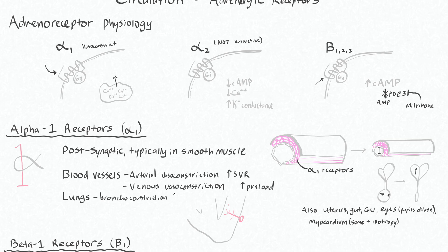This is a slice of your heart — the myocardium — and this is an epicardial vessel, which will have alpha-1 receptors on it. So technically it will vasoconstrict a little bit with an alpha-1 agonist. Just so I don't lead you astray, I don't mean to suggest that the alpha-1 receptors on this epicardial vessel will overall decrease your myocardial perfusion when you give an alpha-1 agonist.